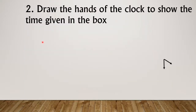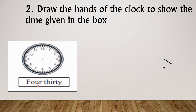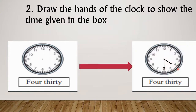Question number two: draw the hands of the clock to show the time given in the box. They will give us the time and we have to draw the hands of the clock. The first one is 4:30 — here you can see how to draw it, and like this you have to draw this in your notebooks.